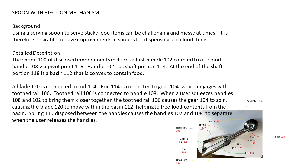And we continue with more details. A blade 120 is connected to rod 114. Rod 114 is connected to gear 104 which engages with tooth rail 106. Tooth rail 106 is connected to handle 108. When a user squeezes handles 102 and 108 to bring them closer together, the tooth rail 106 causes the gear 104 to spin, causing the blade 120 to move within the basin 112, helping to free the food contents from the basin. Spring 110 disposed between the handles causes the handles 102 and 108 to separate when the user releases the handles.